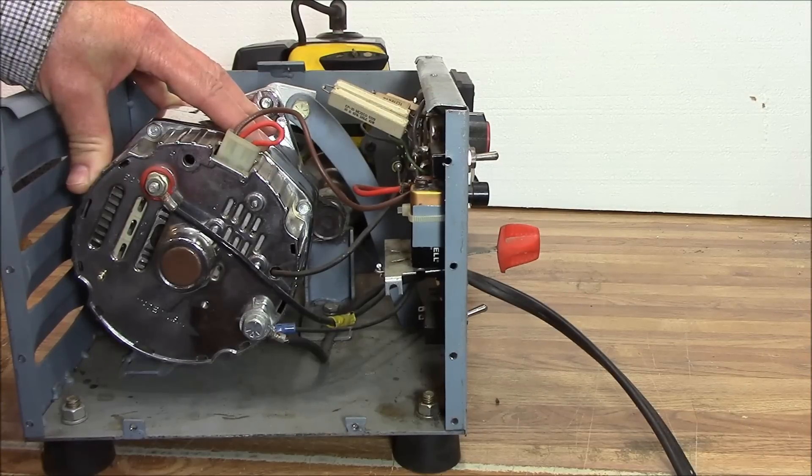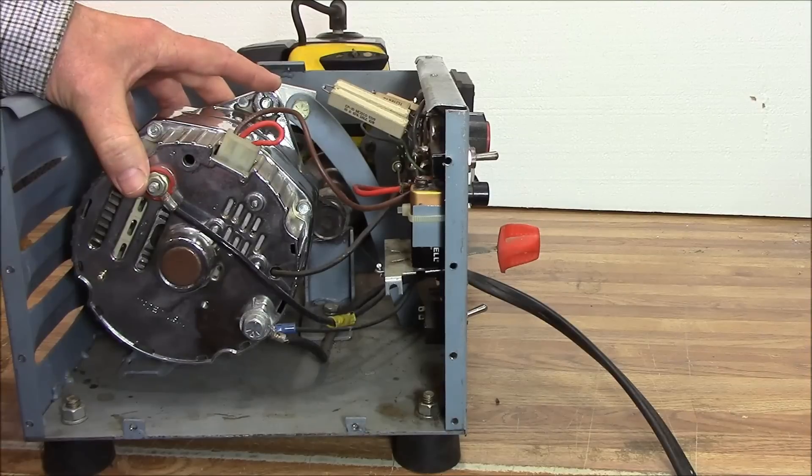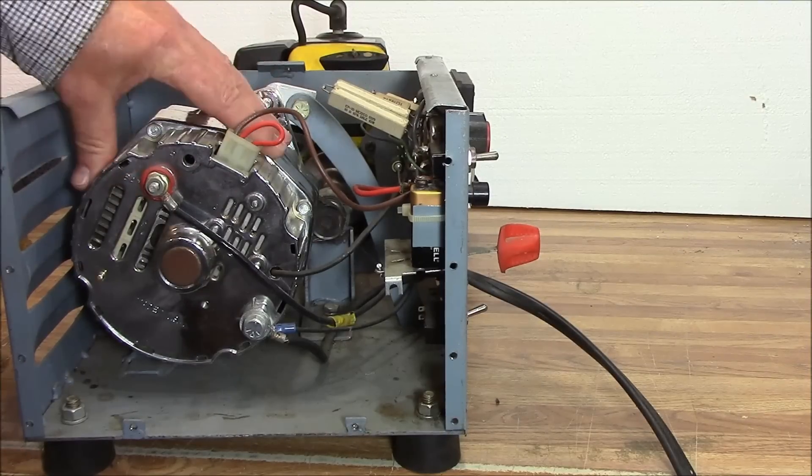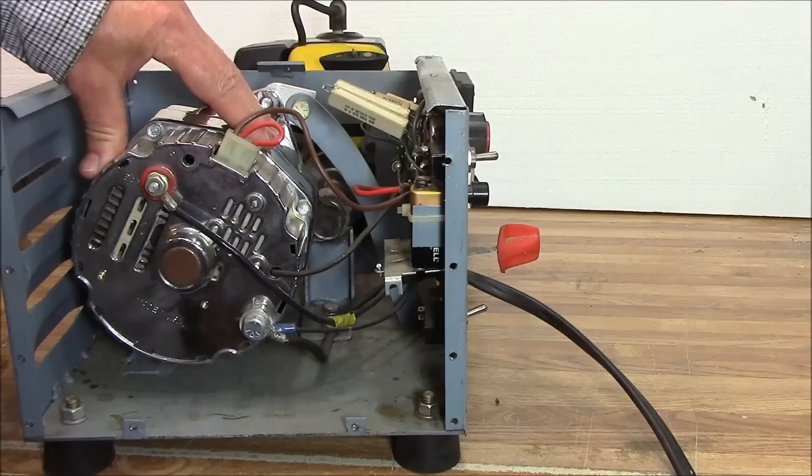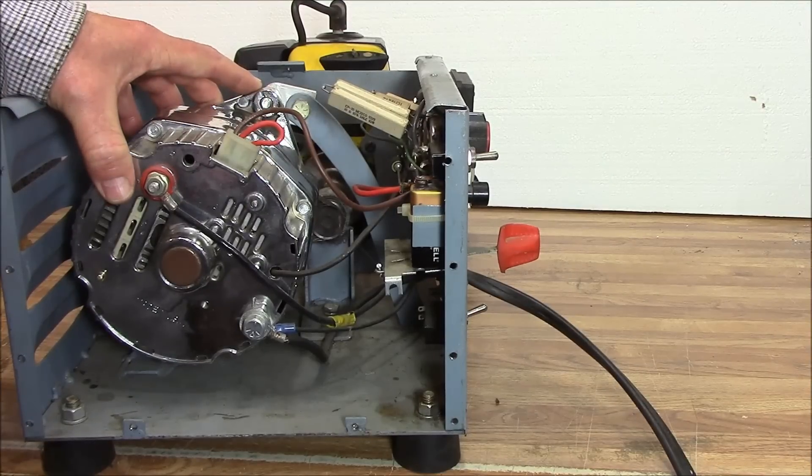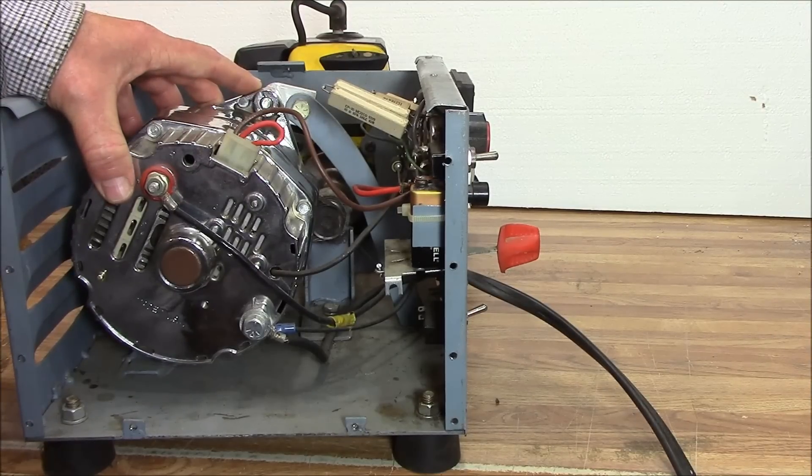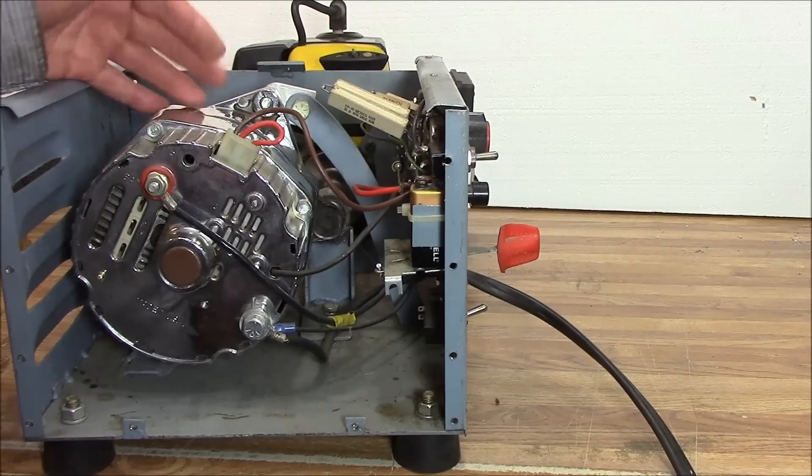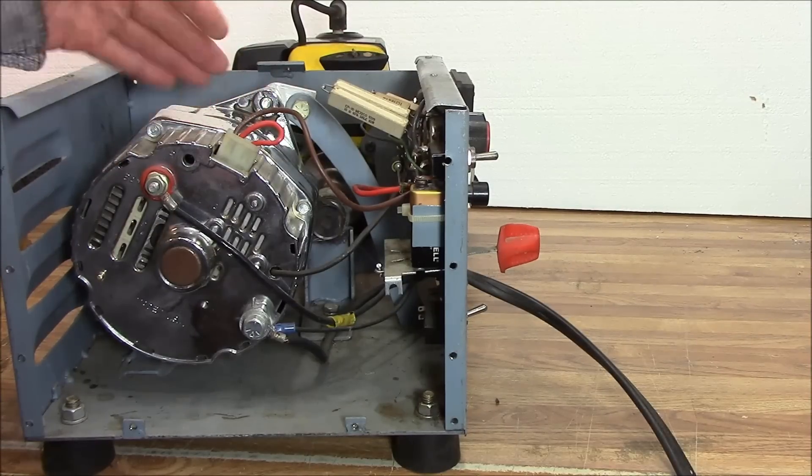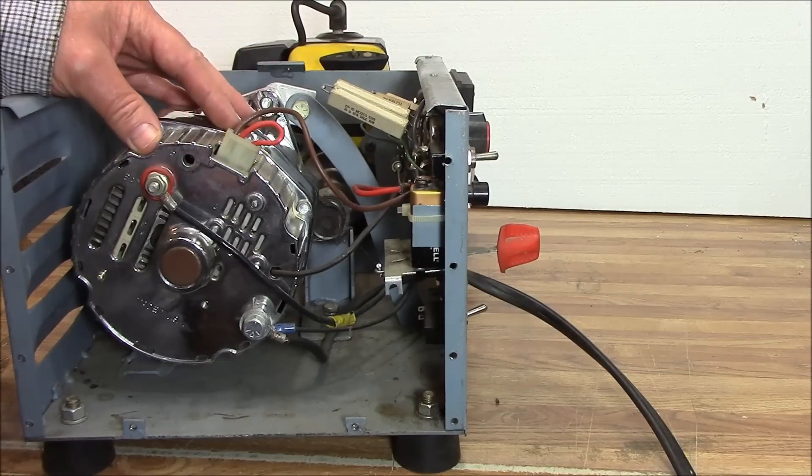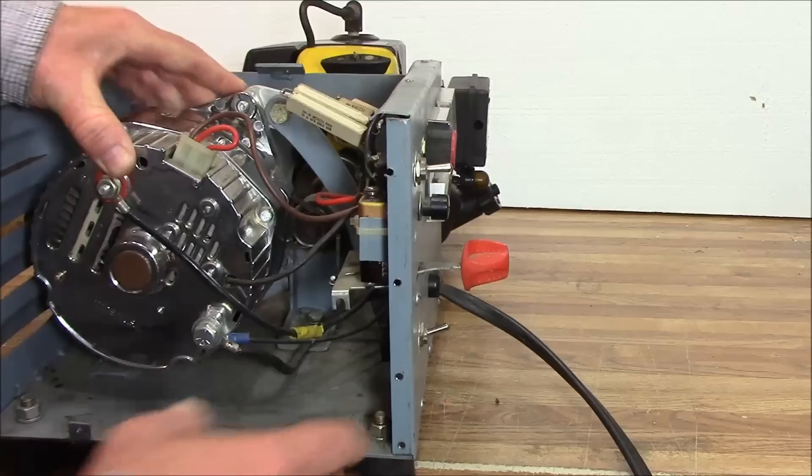The alternator prior to this was called the DN series, the 10DN, which GM ran from the early 60s up to around '69. The 10si came out in '69. Corvette was the very first one to use the 10si. By '72, all GM vehicles used the 10si. Between '69 and '72 you have a mix.